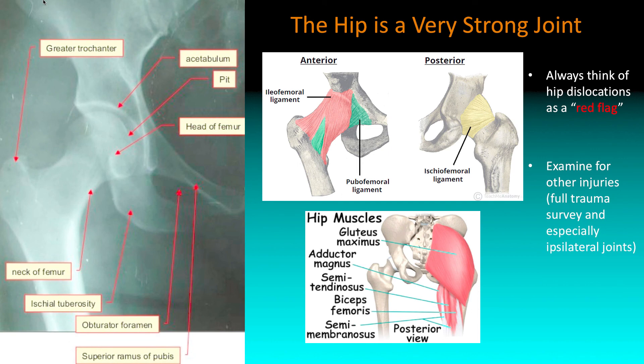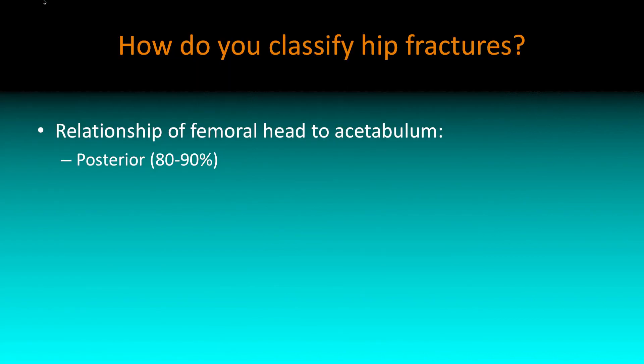Look for other injuries, because it's a pretty significant mechanism. Go through your ATLS and look for other injuries, particularly the knee. But focusing on the hip itself — how would you actually classify them?